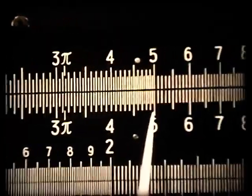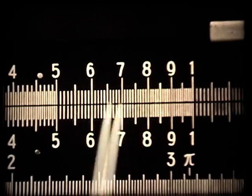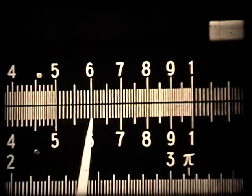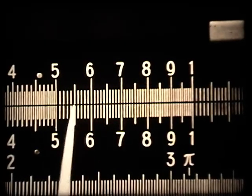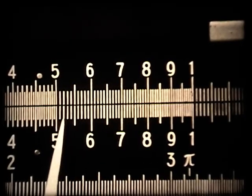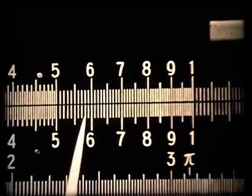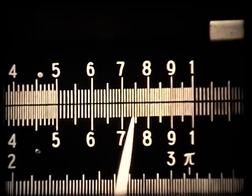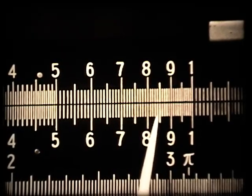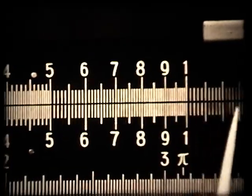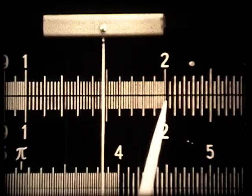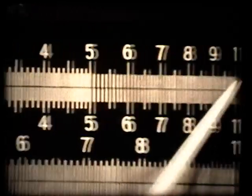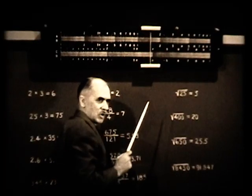Now let's go up to the next section of the rule, between five and ten. It changes again — now we have only tenth divisions between numbers. Between five and six, they're only the tenth divisions, and we have to learn to interpolate. This position would be 5.2, this position 5.8, this position 7.4, and this position 8.4. When we get to ten, the rule repeats itself — between one and two is just the same as at the left-hand end, and it repeats all the way to the end. So we have two scales, one following the other, both alike.